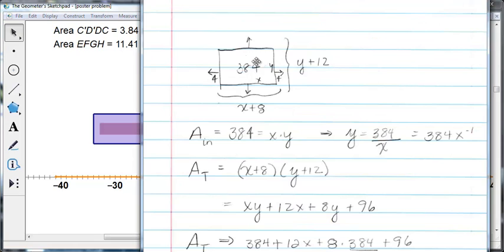Here we are. So again, this inside is 384, and that is the area of x times y. So x times y is 384. And whenever x changes, the y has to adjust itself so that this 384 remains the same.